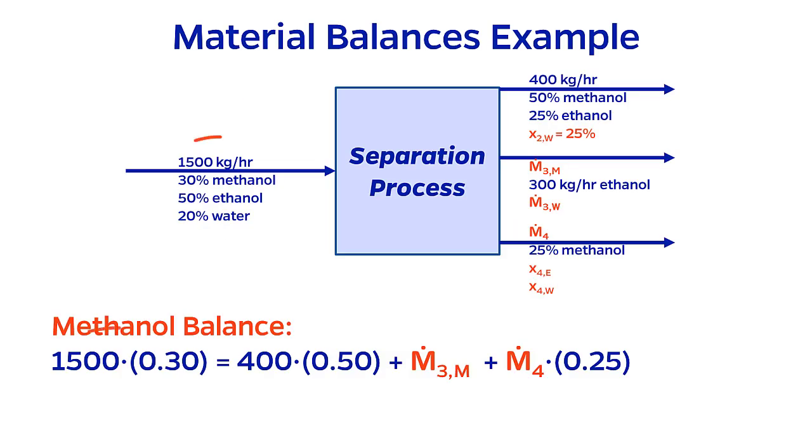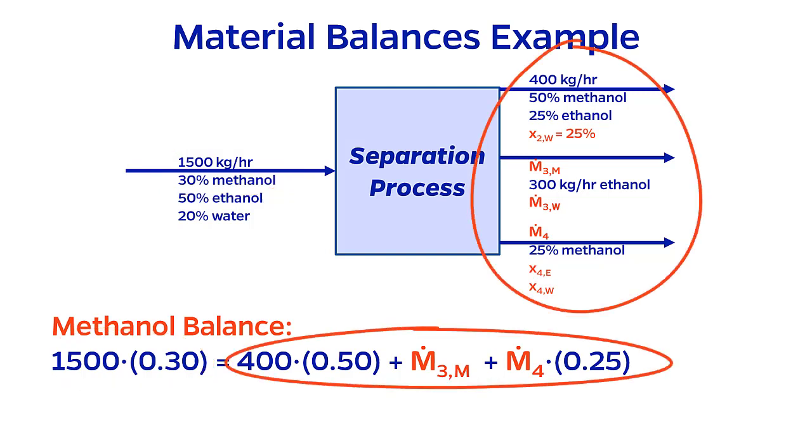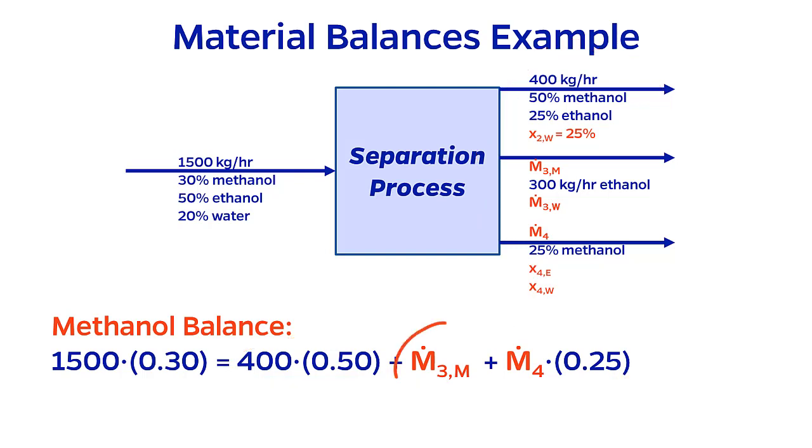For methanol, the amount in is 1500 times 0.3. Methanol exits the separation process in all three outlet streams, so they are all added together on the right side of the equation. Notice again for the middle stream that we have the individual component flow rate, so there is no multiplication by the composition.